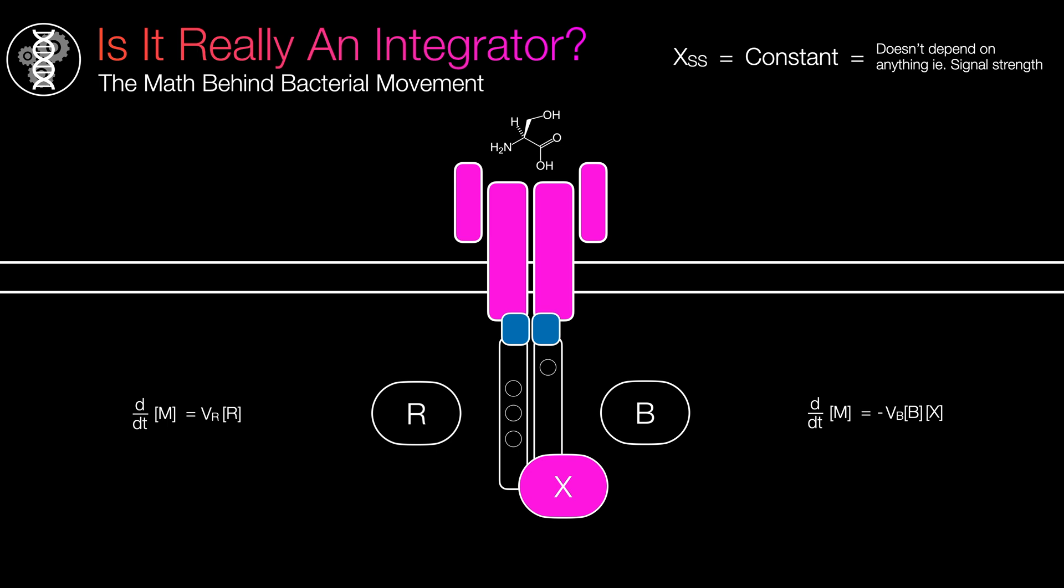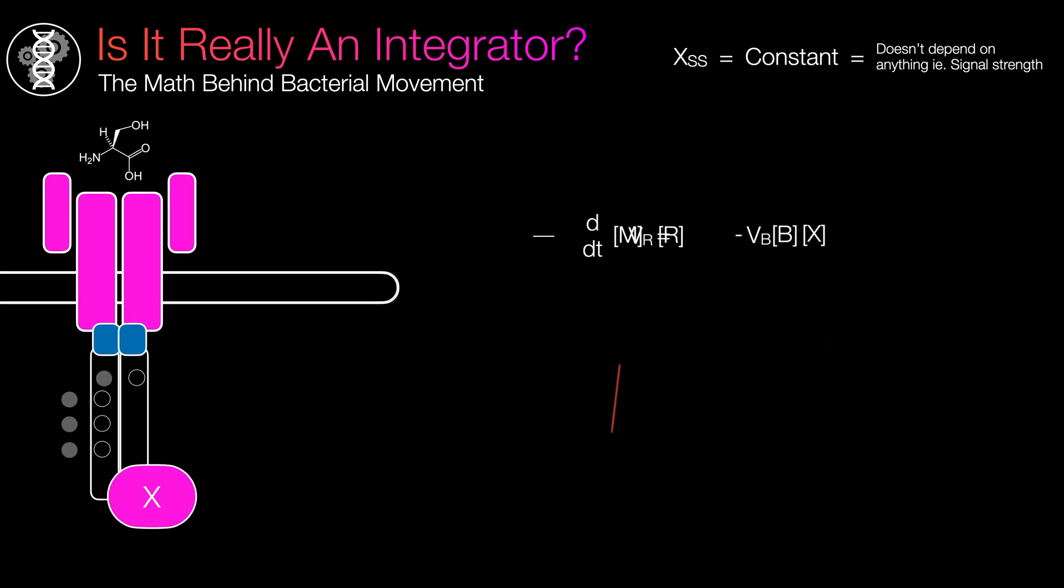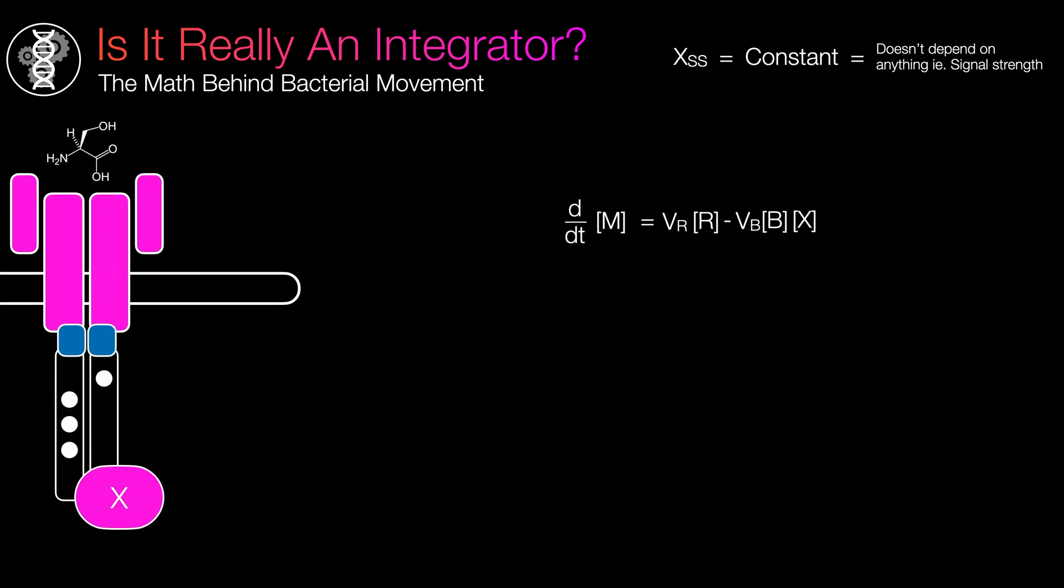Combining these two assumptions, we can derive a differential equation that describes how methylation changes over time. When the system returns to its normal state, methylation should cease since there is no more error to be corrected.